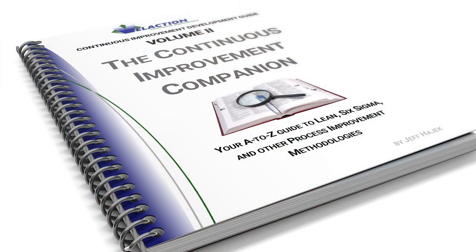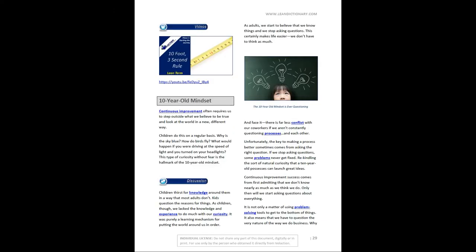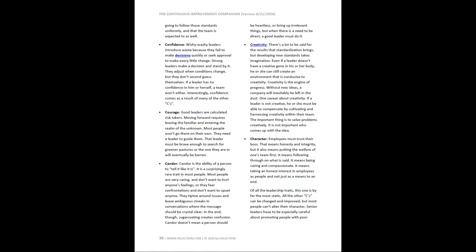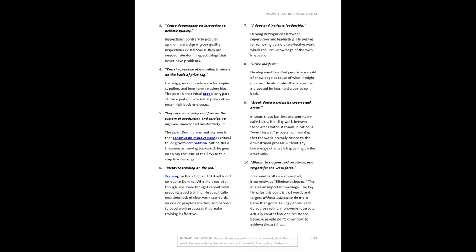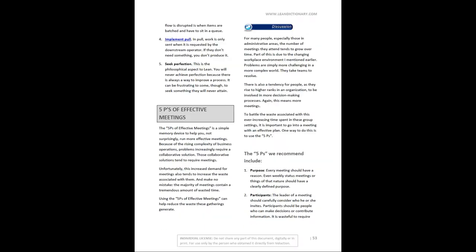Get more out of our Lean Training System videos with our Continuous Improvement Companion. It's closing in on a thousand pages of great content. It is currently available as a download with a subscription to Vilection Videos and as a license through our store. You can also get a free version of it by signing up for our newsletter.